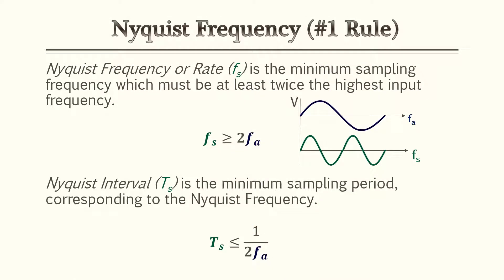The number one rule in sampling, as well as any rule in communication, is knowing the Nyquist frequency or rate. The Nyquist frequency is the minimum sampling frequency, which must be at least twice the highest input frequency. There's also a Nyquist interval, which is the minimum sampling period corresponding to the Nyquist frequency. So every time you have an analog signal being inputted to be digitalized, the sampling rate must be twice the highest frequency. For example, if you have 1000 Hz, you must sample at a minimum of 2000 Hz.